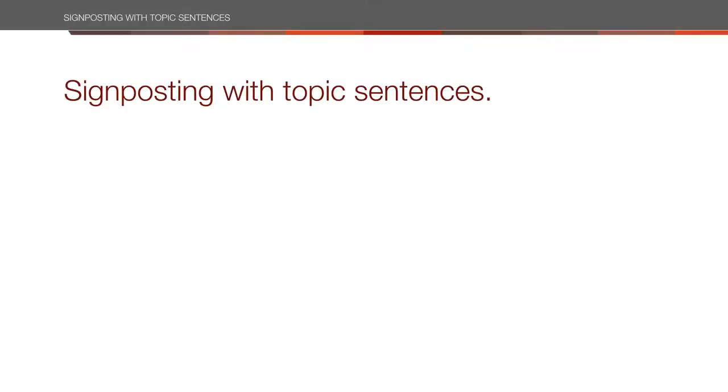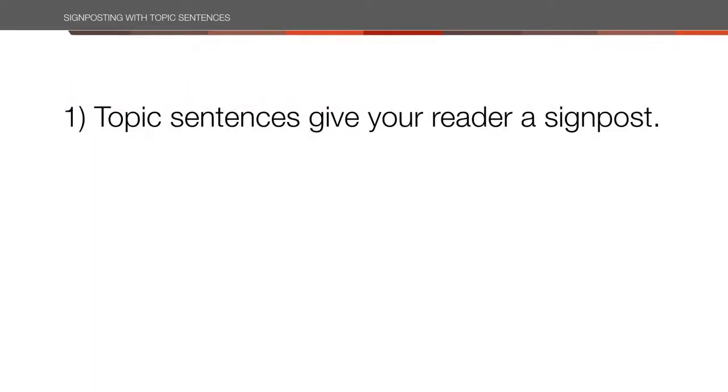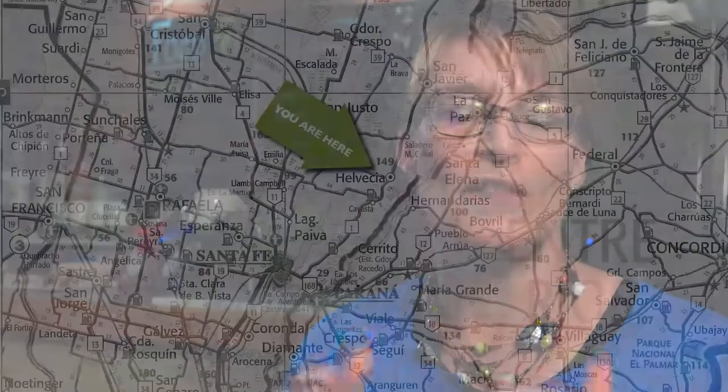In this video we're going to work on topic sentences. What is a topic sentence? A topic sentence is the first sentence of every paragraph. The topic sentence does two vitally important things for you as a writer. First, it gives your reader a signpost on their journey through your document. You provided a roadmap in your introduction, and your topic sentences provide signposts so that your reader knows exactly where they are on the map.